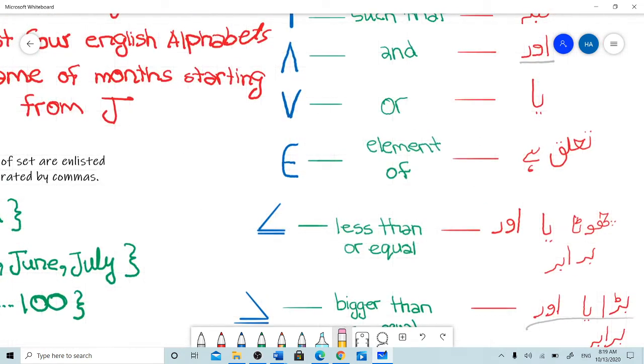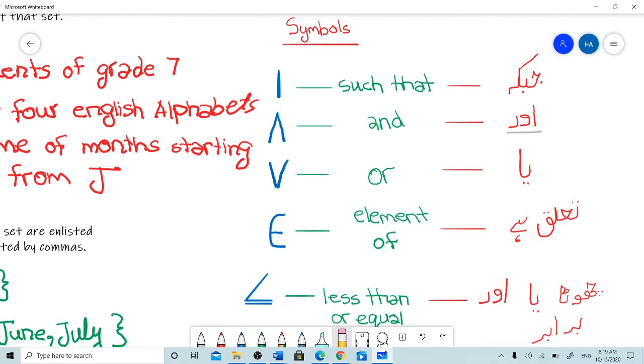For example, this bar over here means 'such that' and in Urdu it means 'jab ki'. This shape means 'and', this V means 'or' (ya). This ∈ symbol means 'element of' (tautaluk hai).